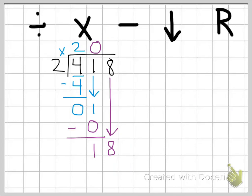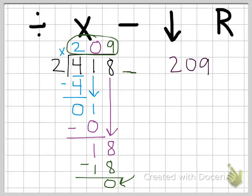Now we repeat our steps. We have 18 divided by two. I know two times nine is 18. So I multiply two times nine is 18, subtract, and get zero. There are no more digits to bring down, and I have zero left, so there's no remainder. My answer is 209. When we check it, we multiply 209 times two. Nine times two is 18. Zero times two is zero plus one. And two times two is four. 418 is what we started with, so we did it correctly.